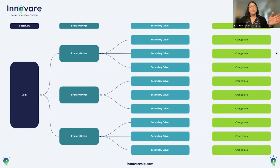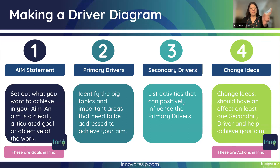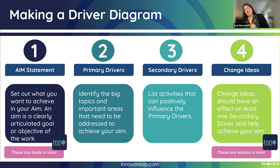Your aim statement is that theory of change we talked about — that's the goal in InnoBear, the screen Adam showed with the goal written across the top. Then you move to your primary drivers — the big bucket, big topic areas that need to be addressed, like high quality instruction. A secondary driver is the next level down: a list of activities that can positively influence primary drivers. For example, curricular professional development under high quality instruction. Your change idea is the really granular specific thing that should affect at least one secondary driver.